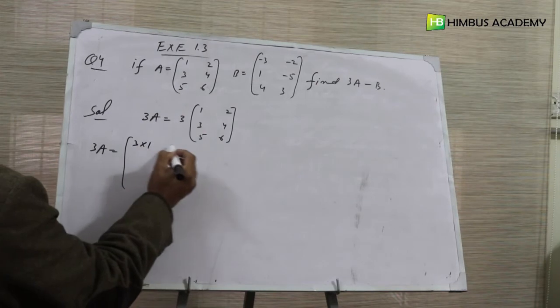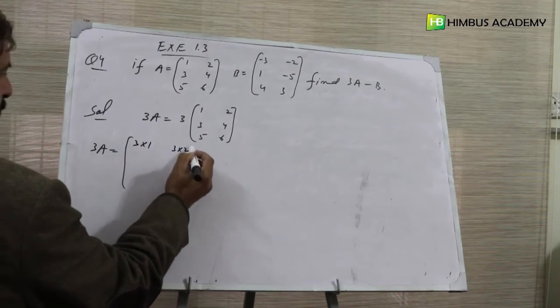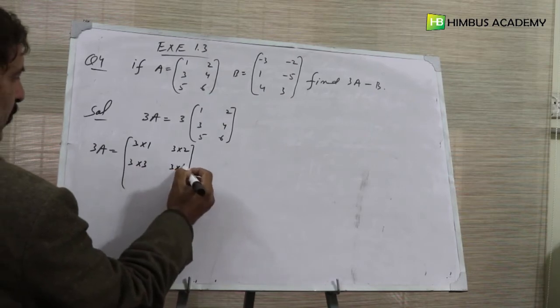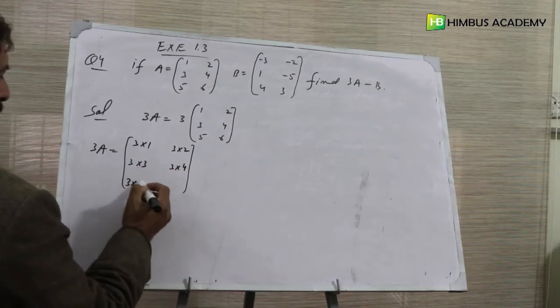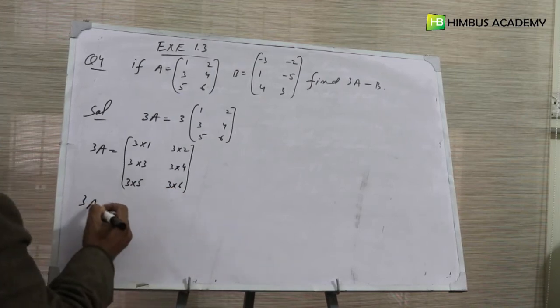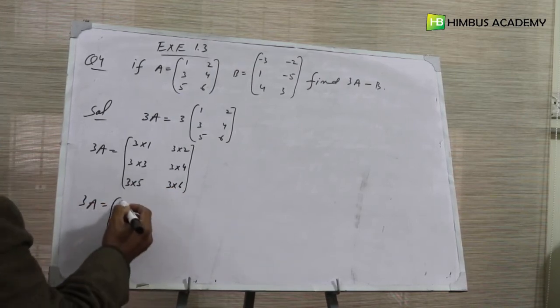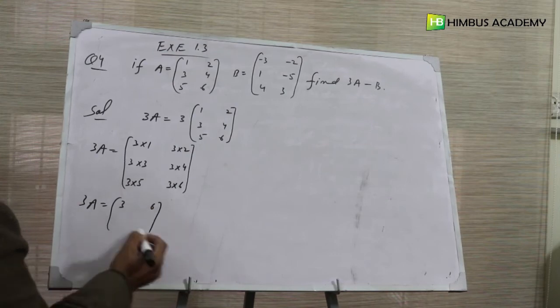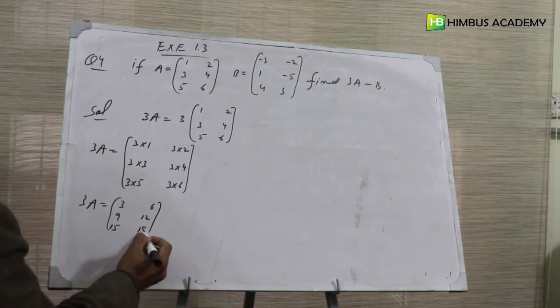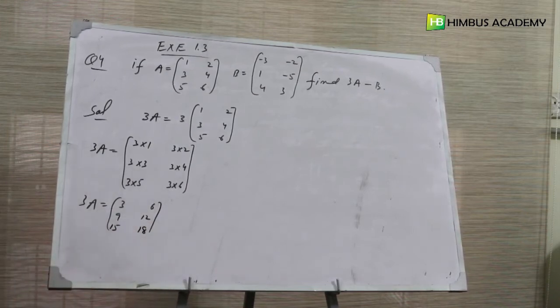3 multiply 1, 3 multiply 2, 3 multiply 3, 3 multiply 4, 3 multiply 5, 3 multiply 6. So 3A equals 3, 6, 9, 12, 15, 18. This is our 3A.